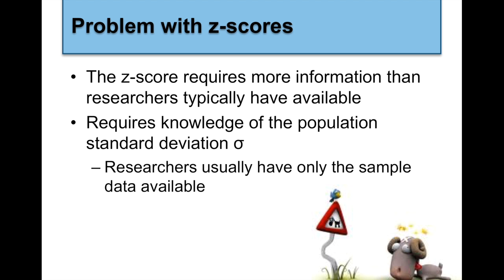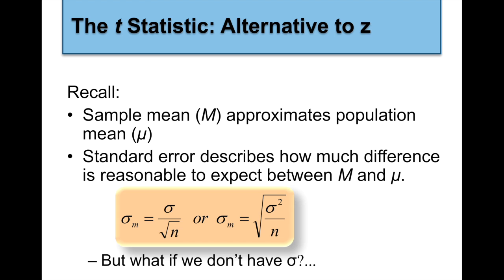There are some problems with z scores. The z score usually requires a lot more information than researchers usually have available, because you have to know a lot about the population — the standard deviation, the population mean. Usually when you're doing research, people only have access to the sample data.